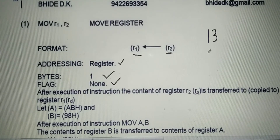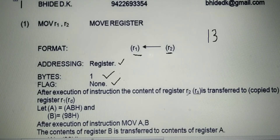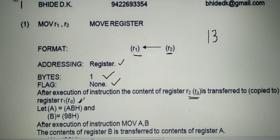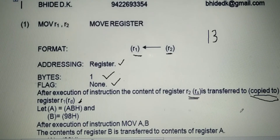The general explanation of this instruction: after execution of the instruction, the contents of register R2 — the source register — are transferred or copied to register R1, the destination register. The data is copied.